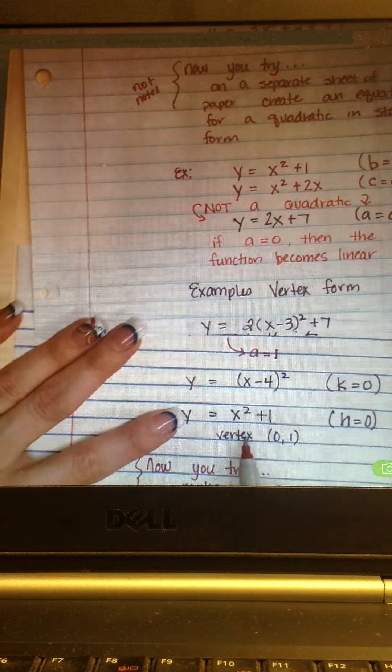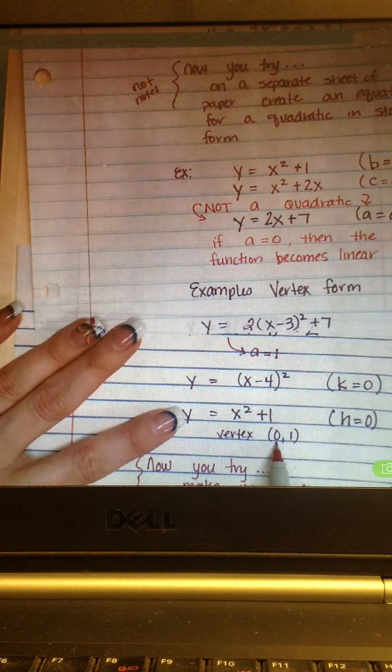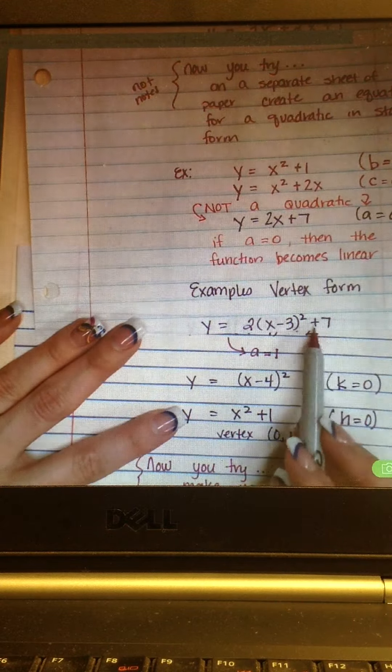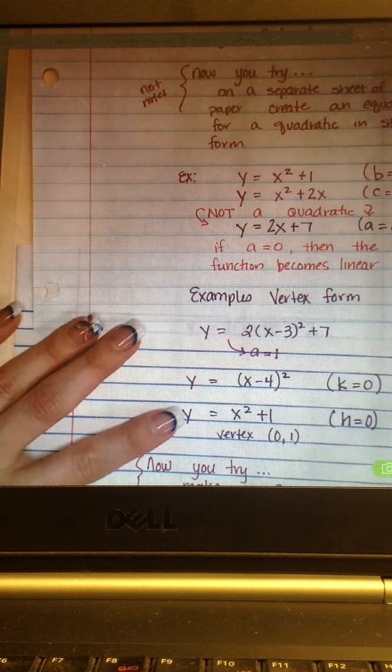You can still see the vertex. There's nothing added to the x before it's squared. So, the x value or K value is 0. And your 1 would be just like this number out here. So, where H equals 0, K would equal positive 1.